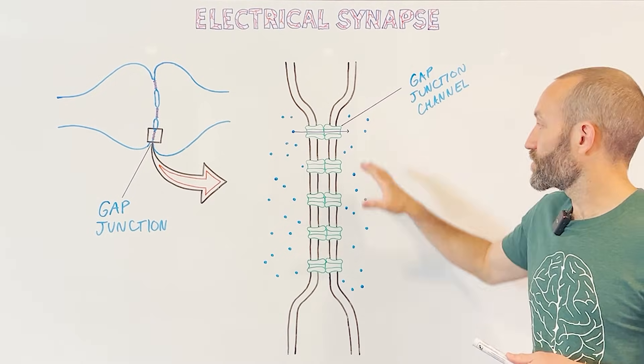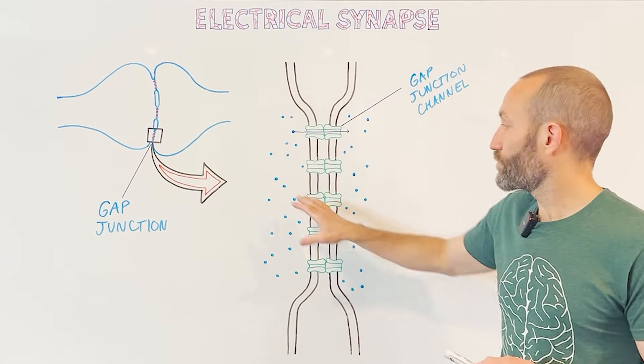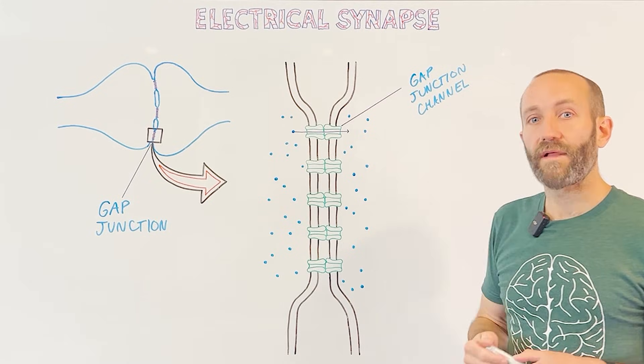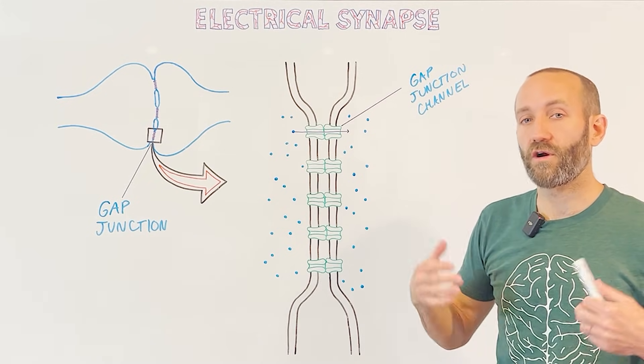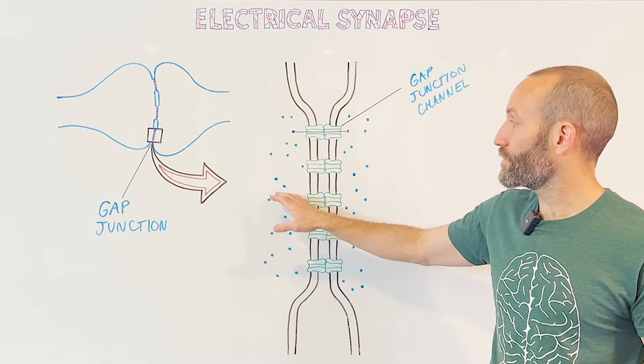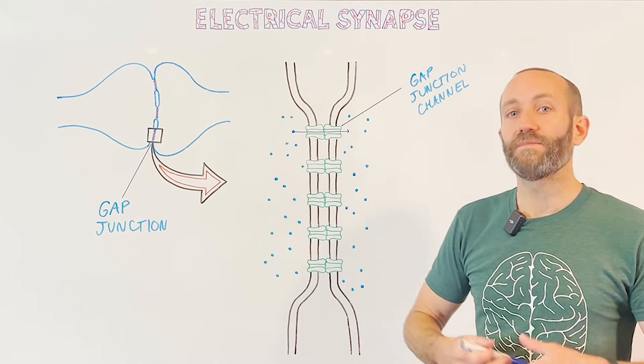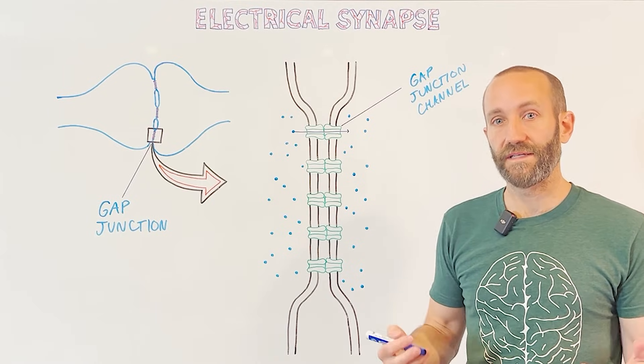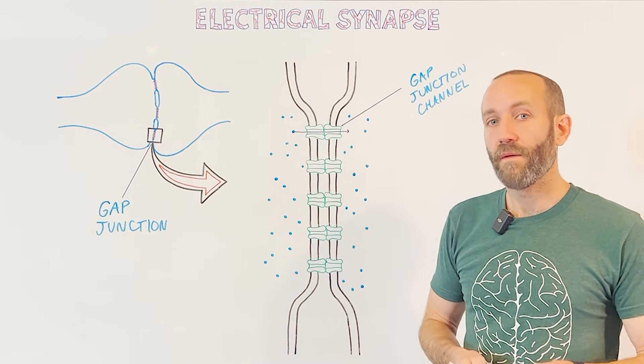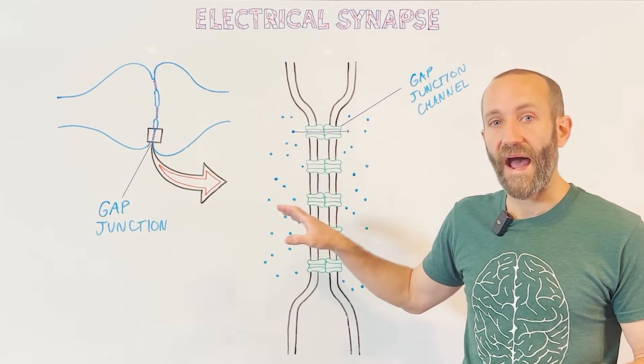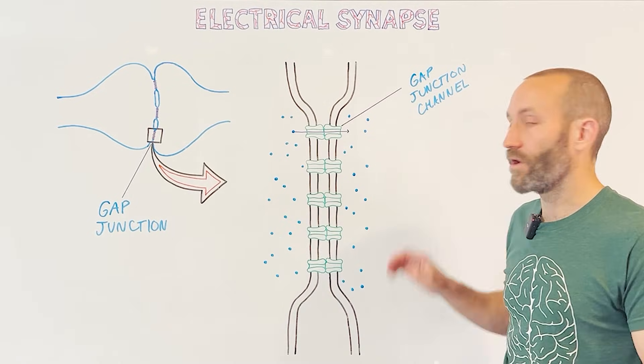So these gap junction channels create a pathway that connects the pre- and postsynaptic neurons and allows electrical impulses in the form of charged particles called ions, which are represented here, to flow from one neuron to the next. So this is basically an extension of the electrical signaling that travels down the axon of the neuron, but it enables that message to pass from the presynaptic neuron to the postsynaptic neuron.